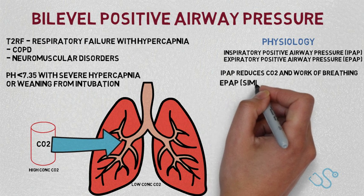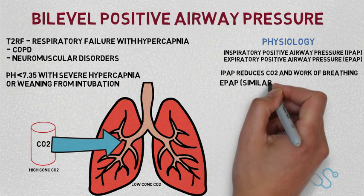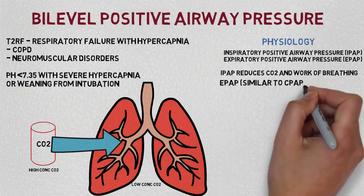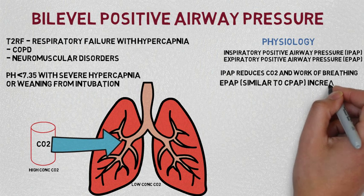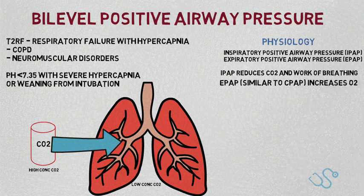The EPAP portion of BiPAP I'd like to think of as similar to CPAP — although this isn't strictly true, for most people you can get away with knowing just the basics. In essence, it helps stent open alveoli that have already collapsed and helps re-expand the lungs upon expiration, which inevitably allows more oxygen delivery. So in summary: IPAP decreases CO2, and EPAP increases O2.